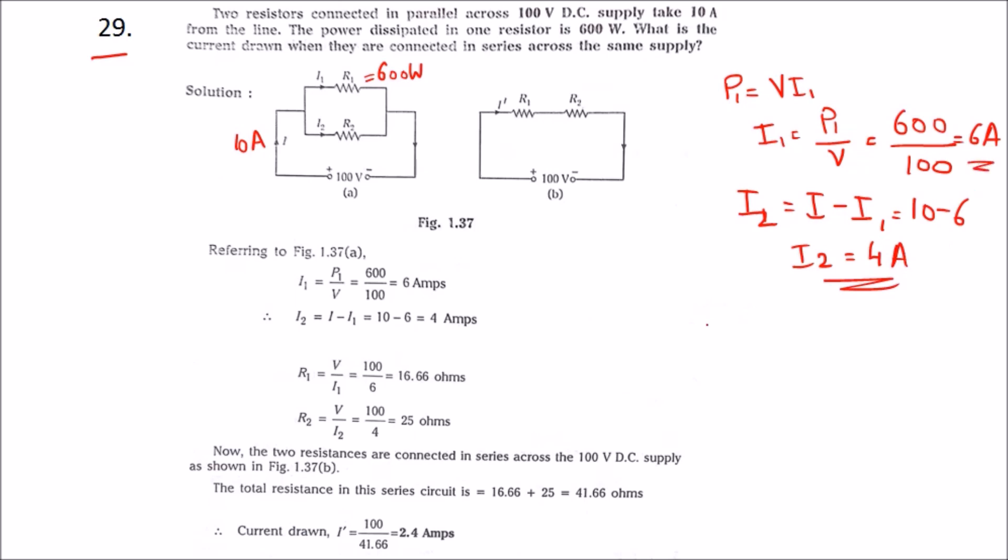Once we get I1 and I2, we can automatically find R1, that is V by I1, that is 16.66 ohms, and R2 is 25 ohms. So we have got everything from figure one.